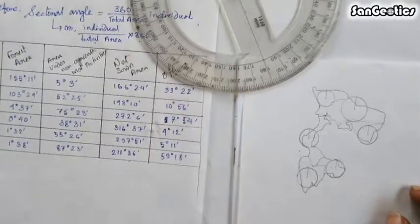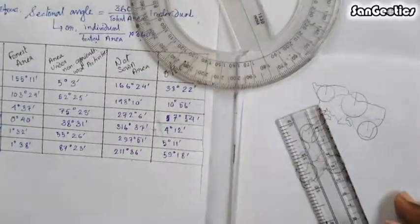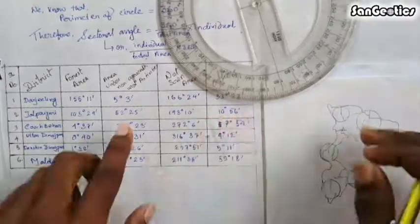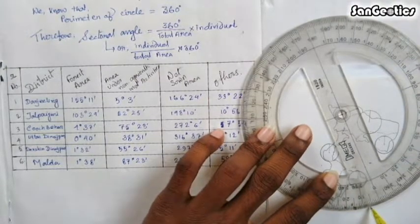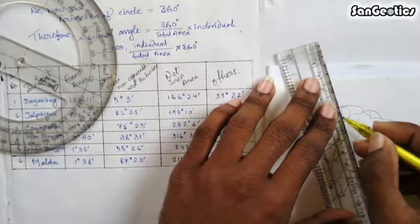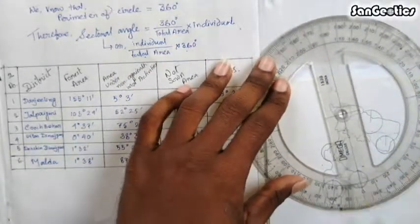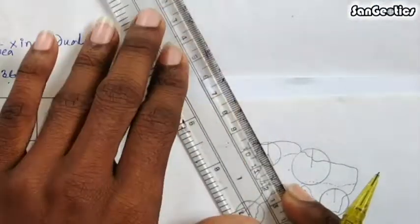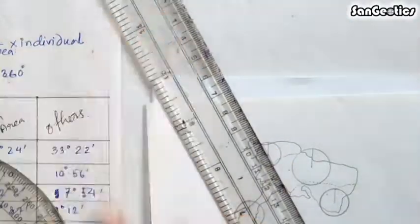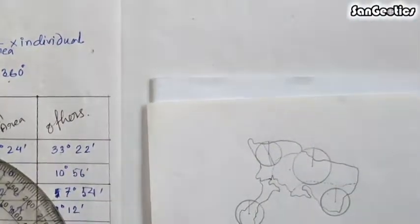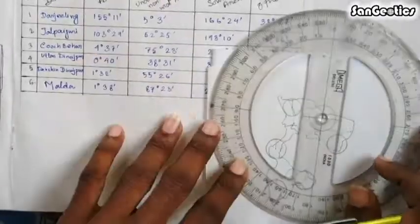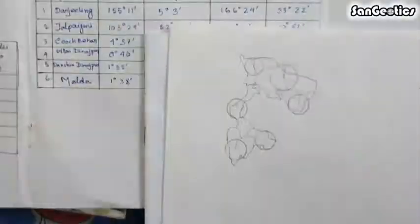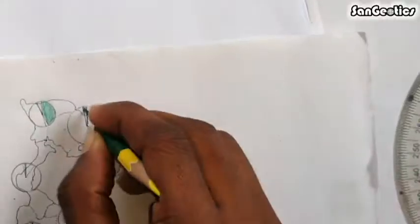Using a protractor, first mark the 155° 11' angle and draw a line. Then measure and draw the 5° 3' angle inside the circle. The next area angle is 166° 24', which is drawn inside the circle, and the remaining angle of 33° 22' represents other areas. Similarly, draw angle lines for all remaining districts using the graphical scale and circle protractor, then fill in various colors.